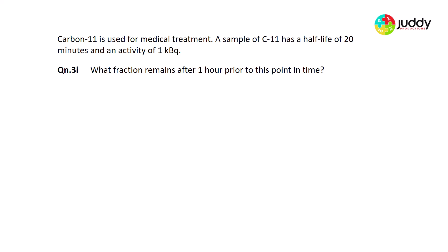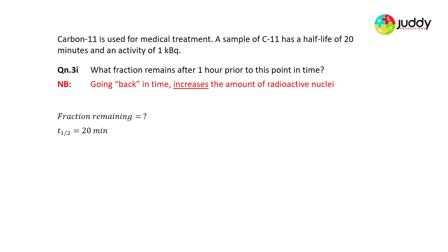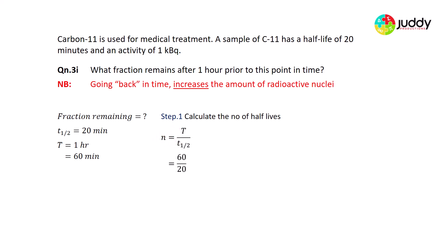Question 3.1: Carbon-11 is used for medical treatment. It has a half-life of 20 minutes and a current activity of 1 kilobecquerel. What fraction of Carbon-11 was present one hour prior? Since we're going back in time, the amount of activity must have been greater. The half-life is 20 minutes; one hour equals 60 minutes. Number of half-lives = 60 ÷ 20 = 3 half-lives.